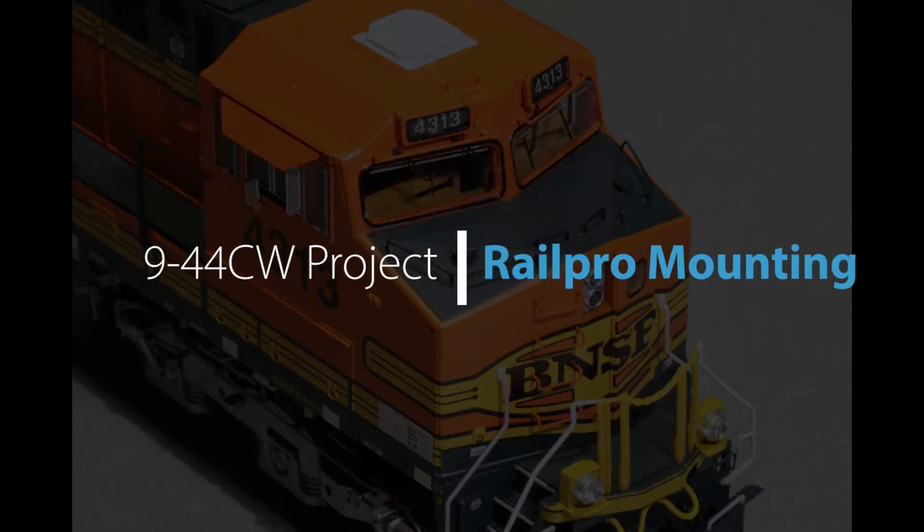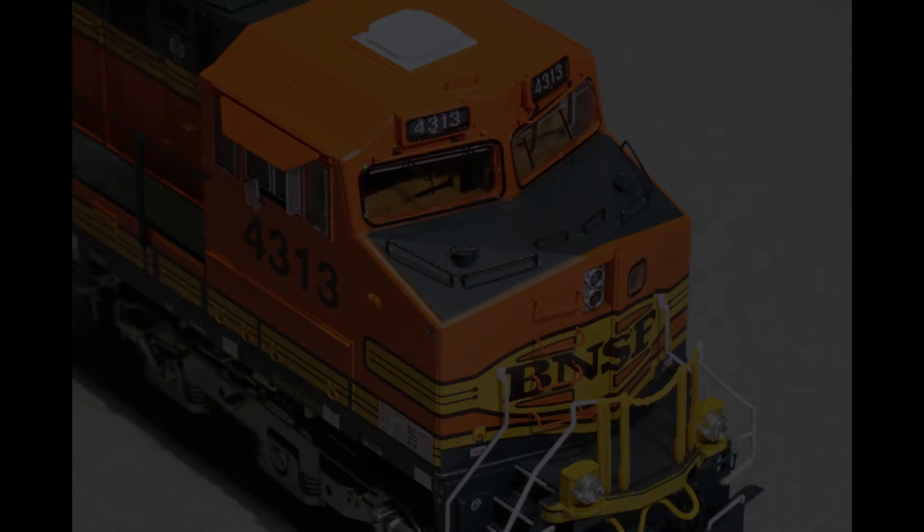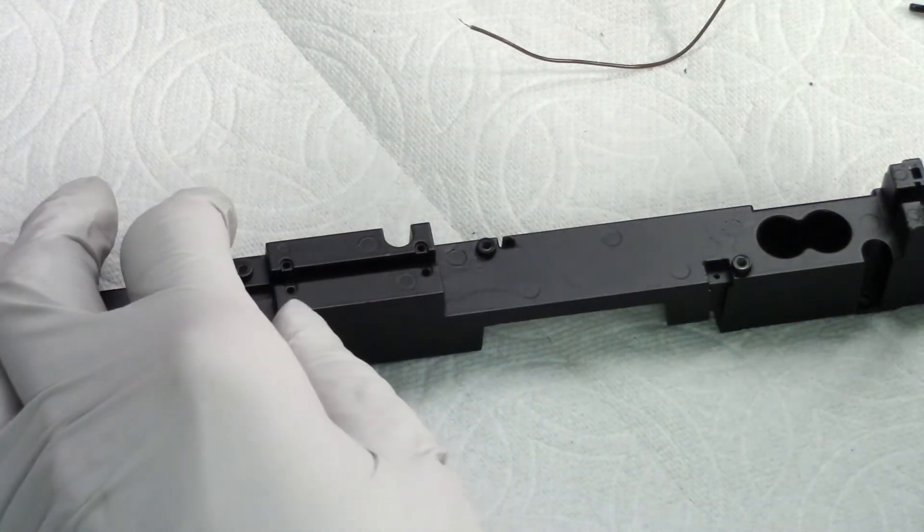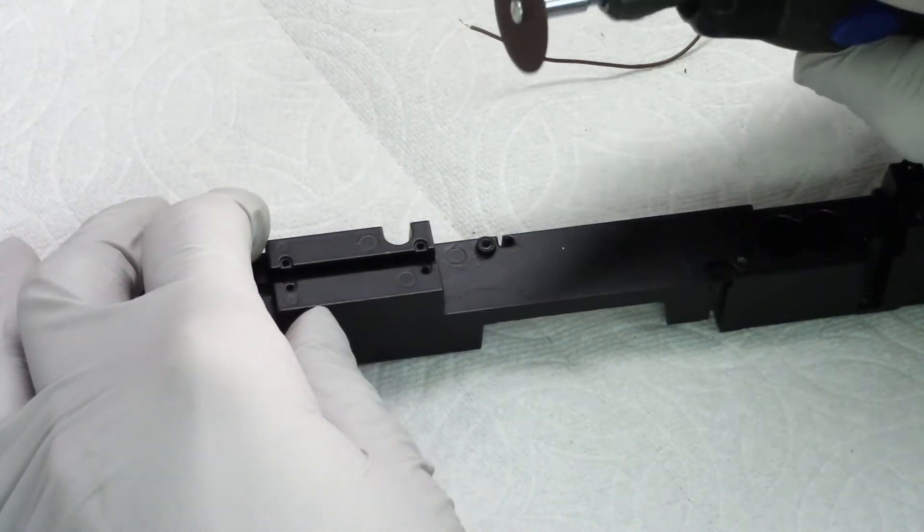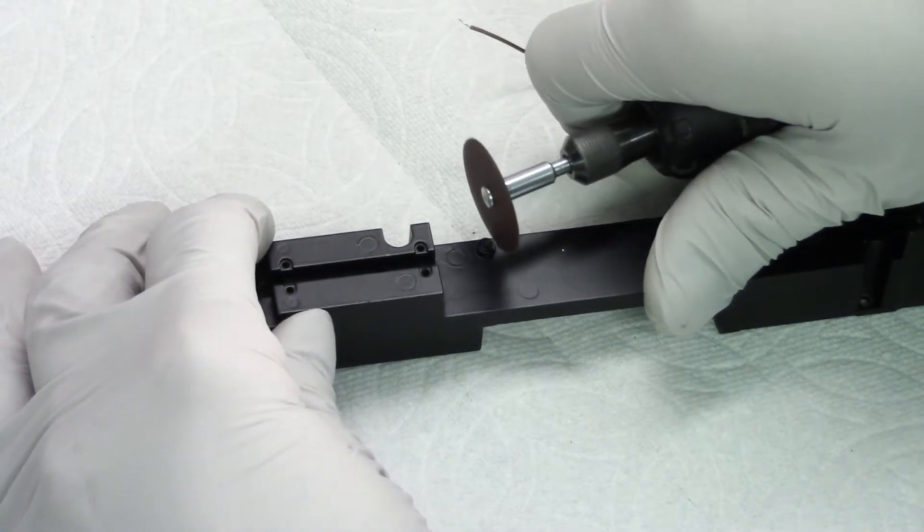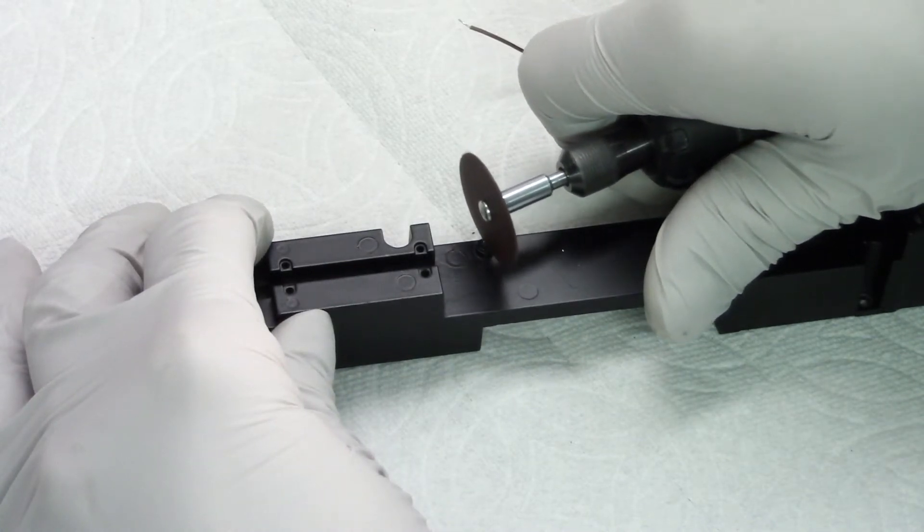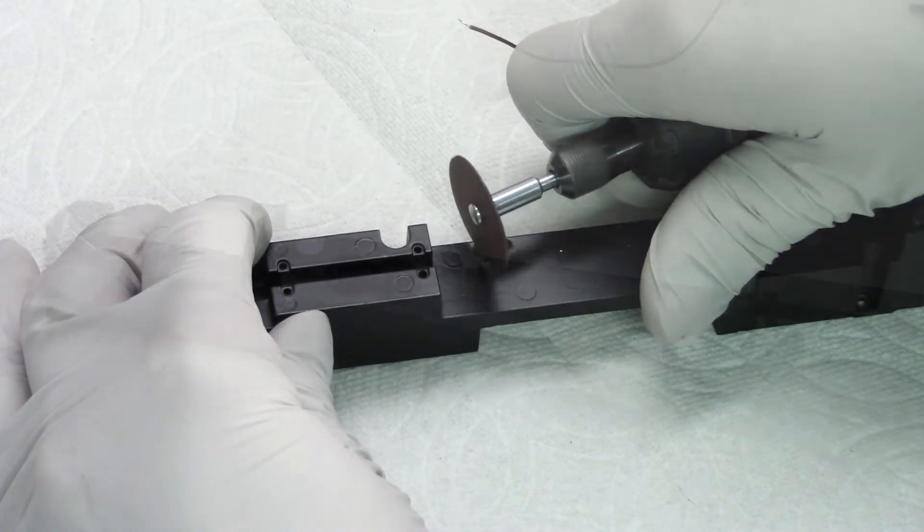Moving on to mounting the RailPro module into the locomotive. I wanted the module to fit down where the factory board used to be. But these two mounting tabs were in the way and they kept the module sitting too high.